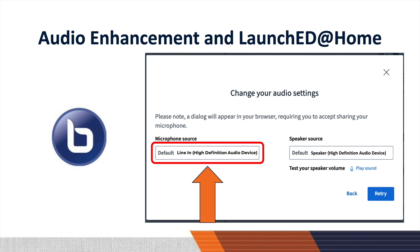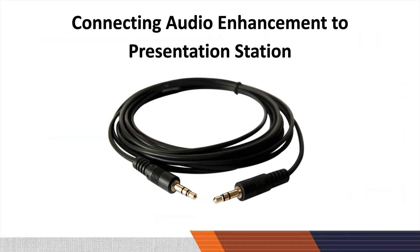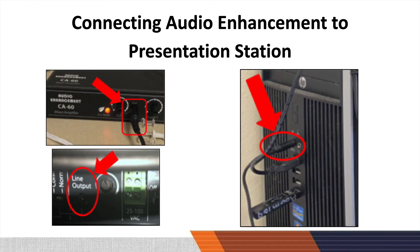When Change Your Audio Settings pops up, select Line In — High Definition Audio Device. This will allow for the clearest audio for both the classroom and the LaunchED at-home students. To connect your audio enhancement to your computer, use the 3.5 millimeter cable: connect it from audio enhancement out to computer microphone in. This will give students both at home and in the classroom the best audio experience.